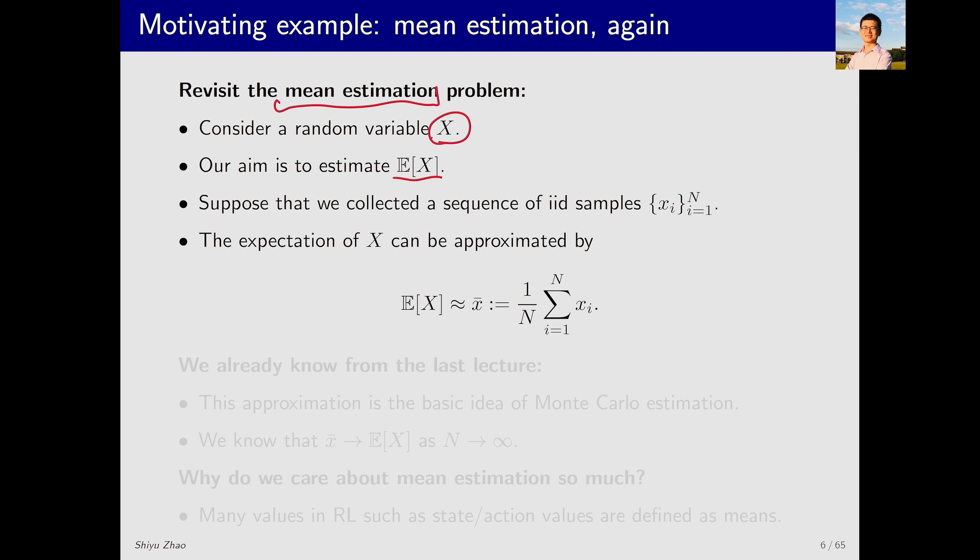What do we have? We have some independent and identically distributed samples, x_i from 1 to n. How do we use these samples to estimate the expectation? We take the average of these samples, which gives us x-bar.